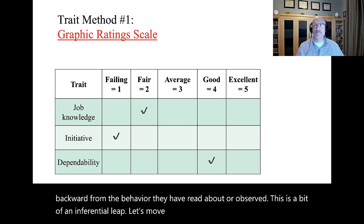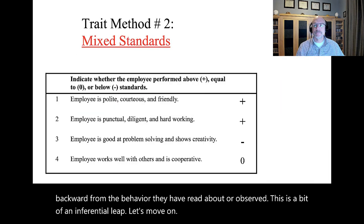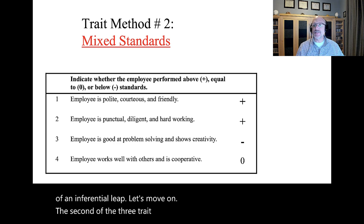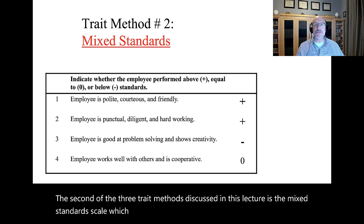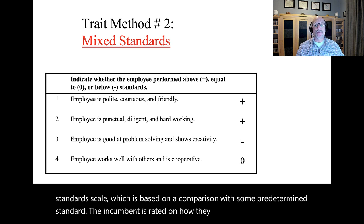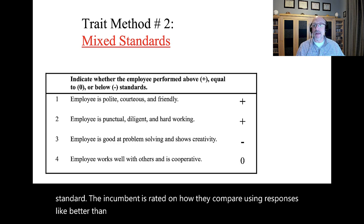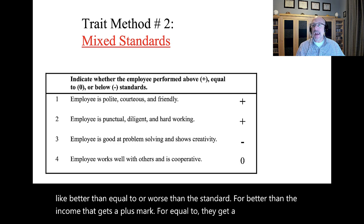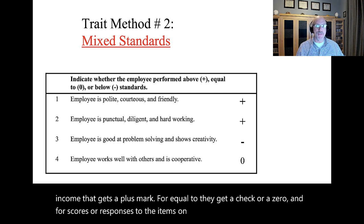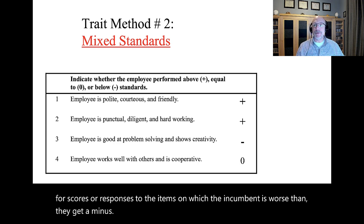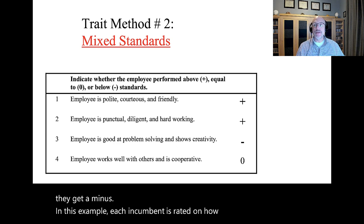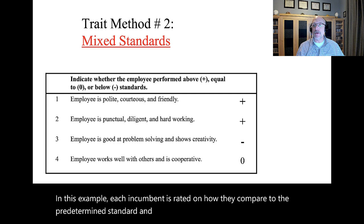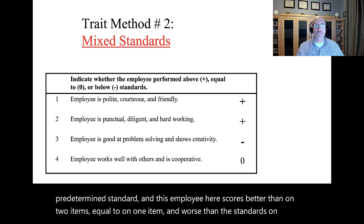The second trait method is the mixed standards scale, which is based on a comparison with some predetermined standard. The incumbent is rated on how they compare using responses like better than, equal to, or worse than the standard. For better than, the incumbent gets a plus mark; for equal to, they get a check or zero; and for worse than, they get a minus. In this example, this employee scores better than on two items, equal to on one item, and worse than the standards on another item.